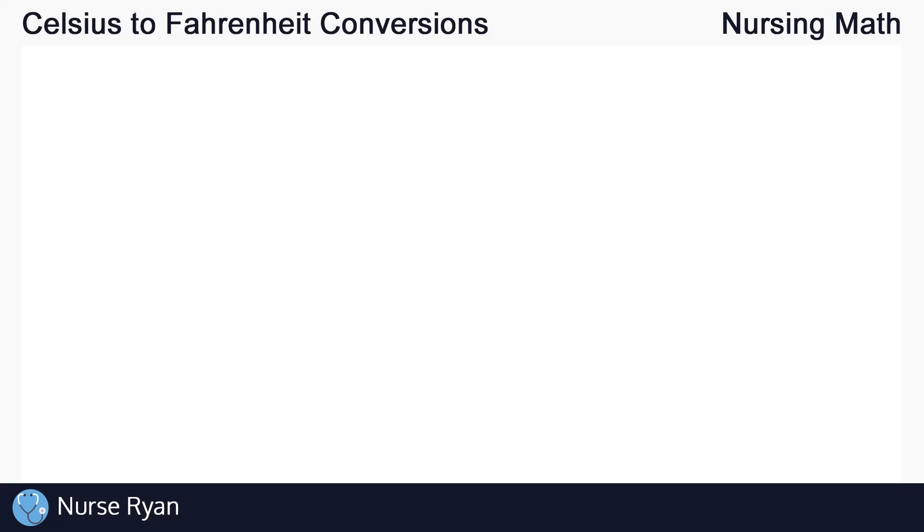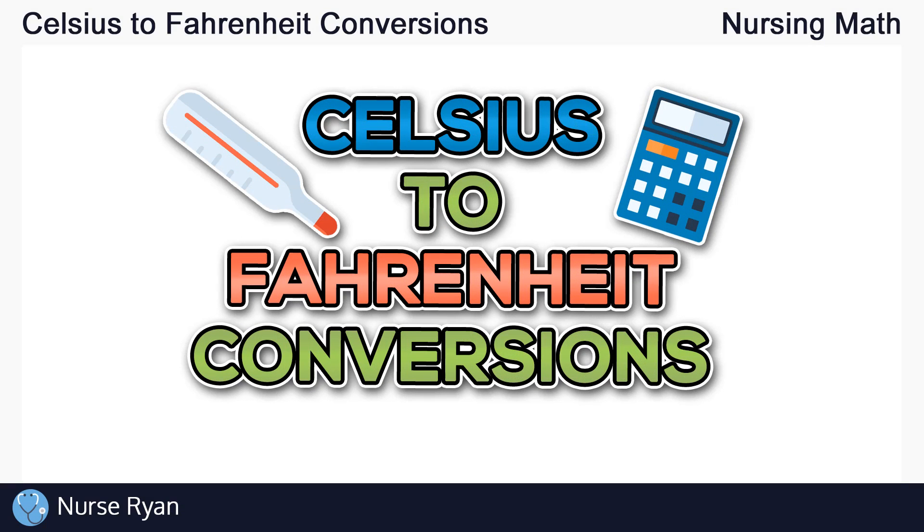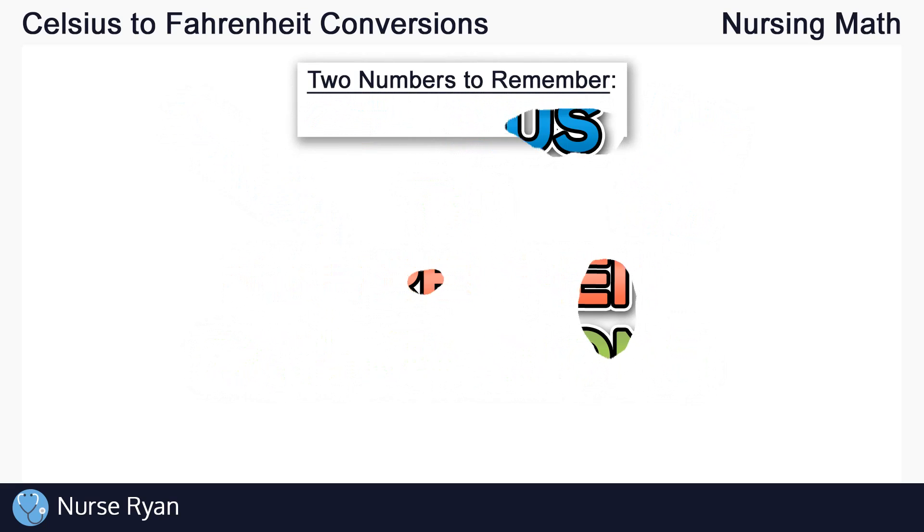Hey everyone, this is Nurse Ryan, and in this video we're going to learn how to convert from Celsius to Fahrenheit, or Fahrenheit to Celsius, in two very quick and easy steps. There are really only two numbers that you have to remember for this method, and those are 1.8 and 32.